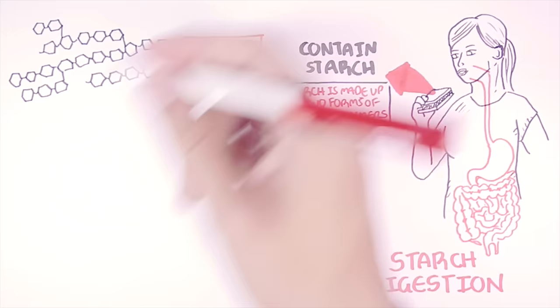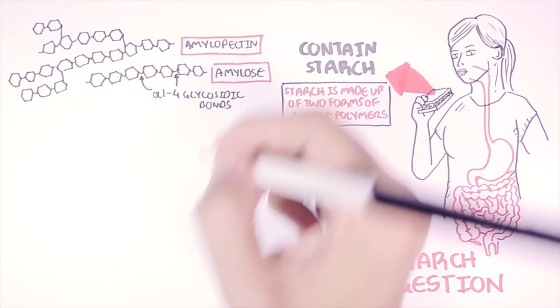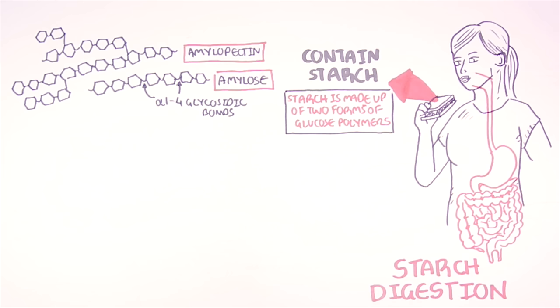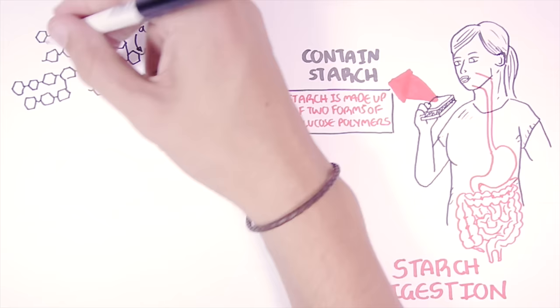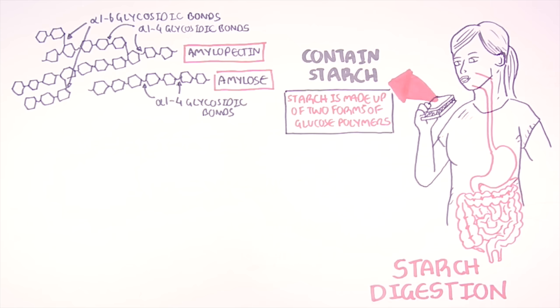Amylose is a linear chain of glucose linked together by α-1,4 glycosidic bonds. Amylopectin are linear chains of glucose with branch points creating a tree-like figure. In amylopectin the glucose molecules are also linked by α-1,4 glycosidic bonds, but the branch points are linked by α-1,6 glycosidic bonds.